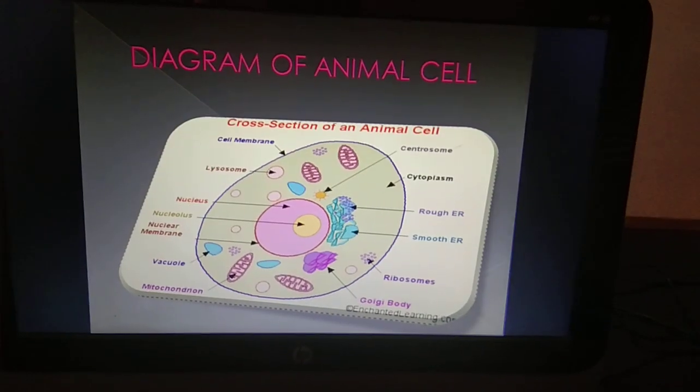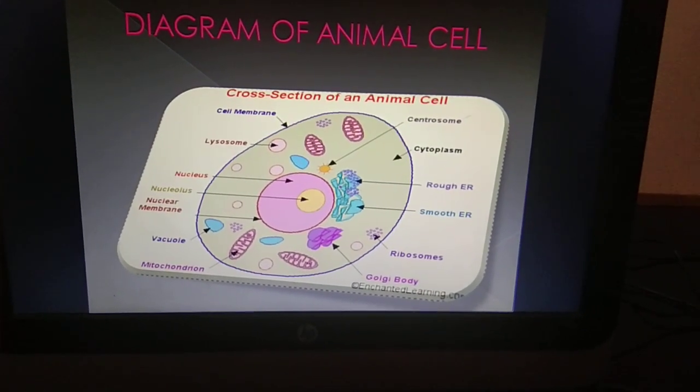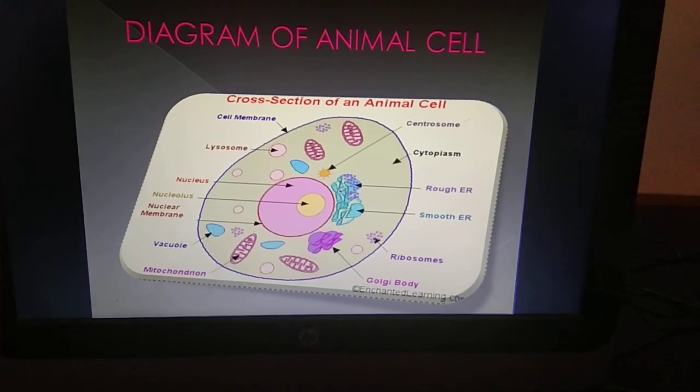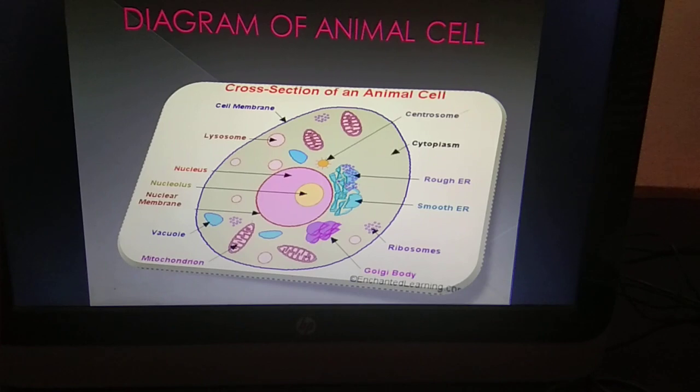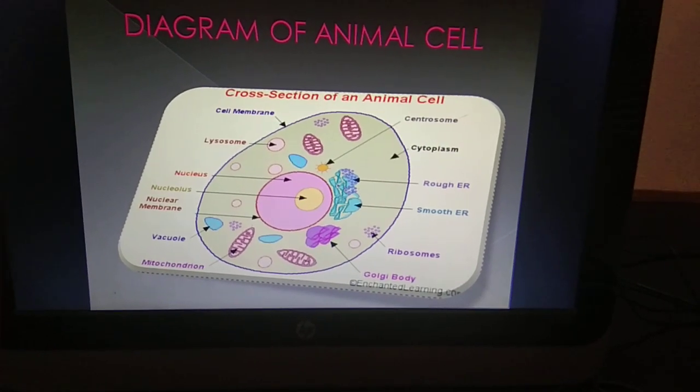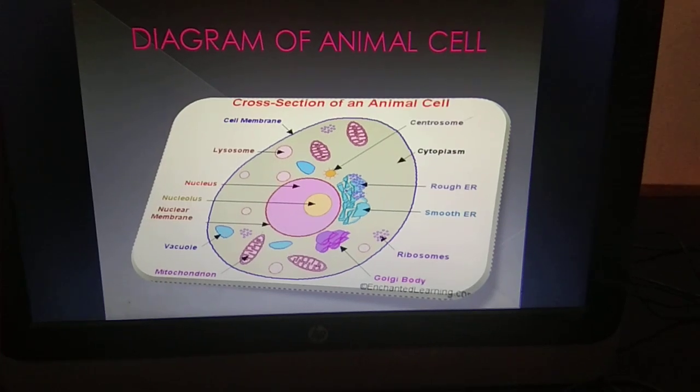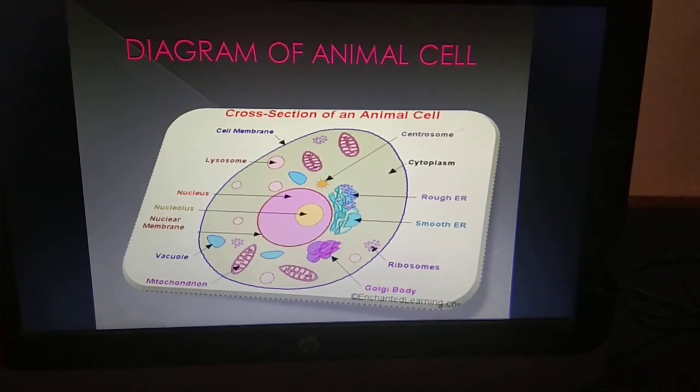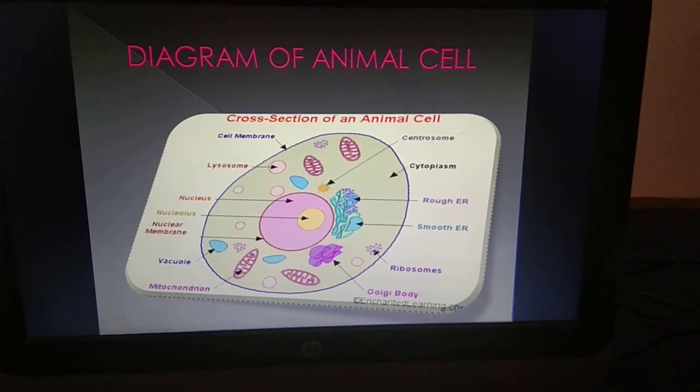As you can see, this is the diagram of animal cell. Animal cell consists of cell membrane, lysosomes, nucleus, nucleolus, nuclear membrane, vacuole, mitochondria, Golgi body, ribosomes, smooth endoplasmic reticulum, rough endoplasmic reticulum, cytoplasm, and centrosome.